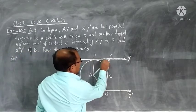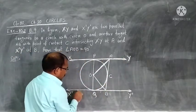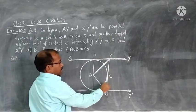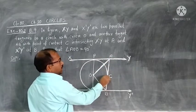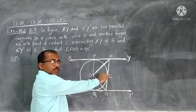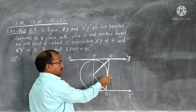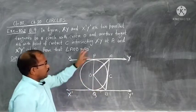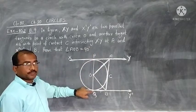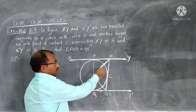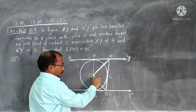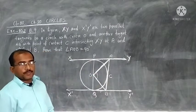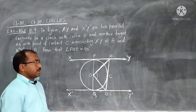These two tangents are parallel and another tangent intersects the circle. The point of contact where it touches the circle is C. The two parallel tangent points of contact are P and Q. We have to prove angle AOB is 90 degrees. Let us see how we do it.